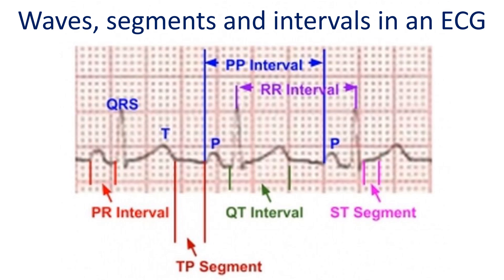P wave represents the depolarization of the atria, while QRS complex represents the depolarization of the ventricles. T wave is due to the repolarization of the ventricles.